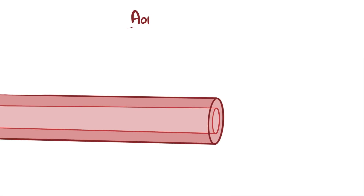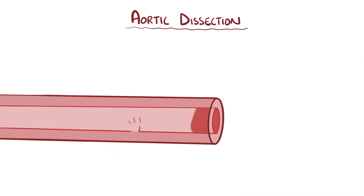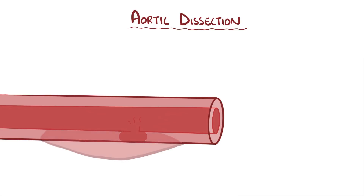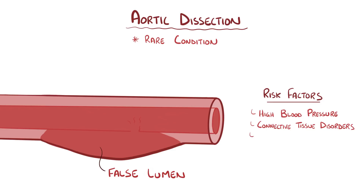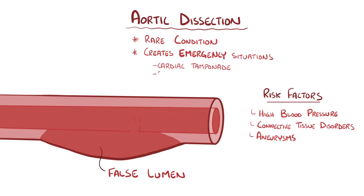As a quick recap: an aortic dissection is where blood tunnels between the tunica intima and tunica media, separating the two layers and creating a false lumen. This is a rare condition that most often happens with a history of high blood pressure, connective tissue disorders, and aneurysms. An aortic dissection can lead to emergency situations like cardiac tamponade and shock, and should be treated immediately.